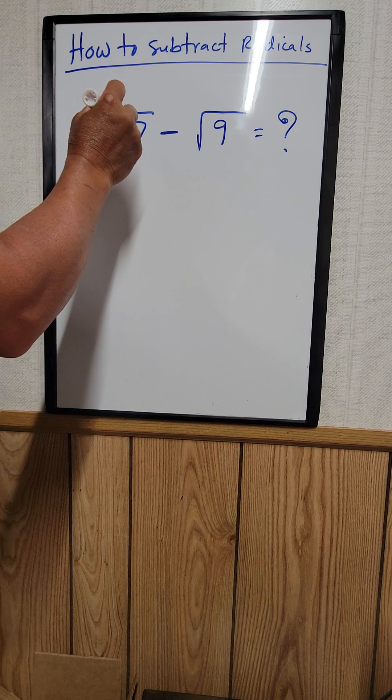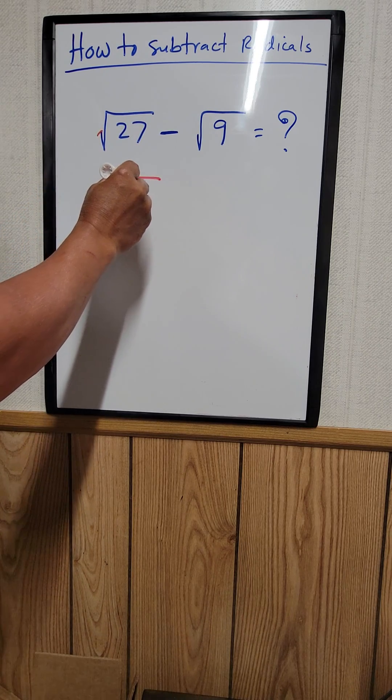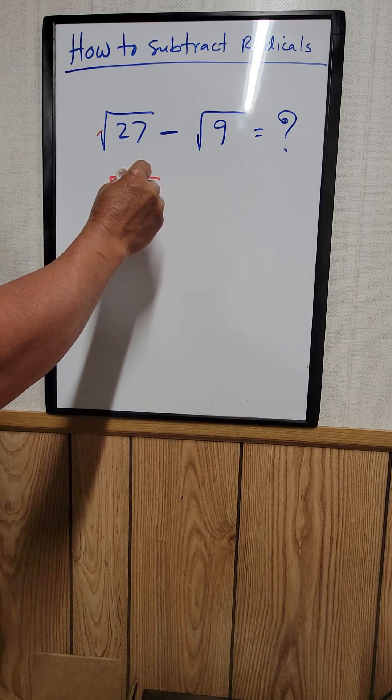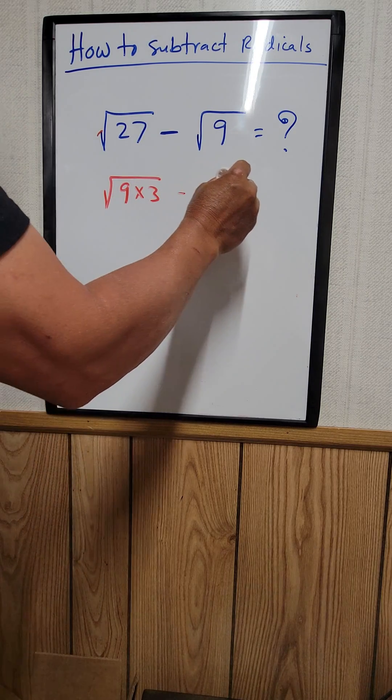So the square root of 27, we can break that down as the square root of 9 times 3 minus the square root of 9.